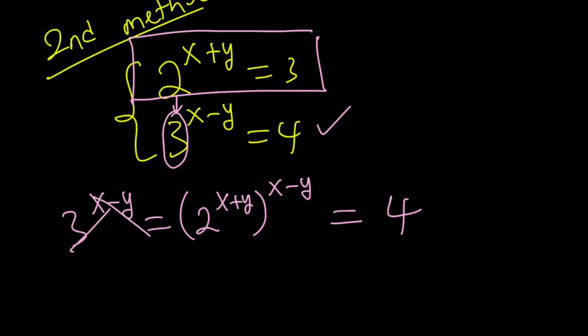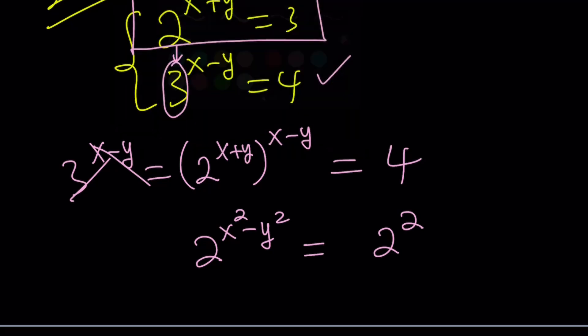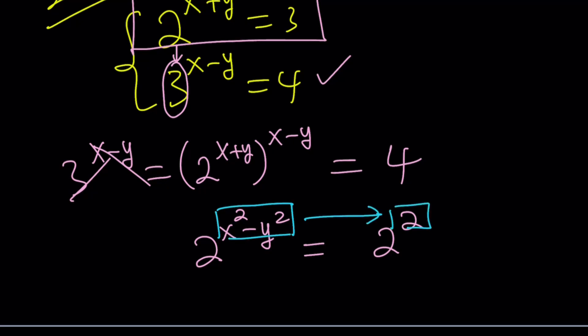Now forget about this and focus on the 2. We raise a power to another power, so we're going to multiply the exponents. And as you know, x plus y times x minus y is x squared minus y squared. You see, this tells you how important it is to be aware of this formula, difference of 2 squares. And 4 can be written as 2 squared. From here we get something super duper nice: x squared minus y squared equals 2. And that's what we were looking for.